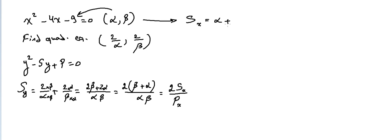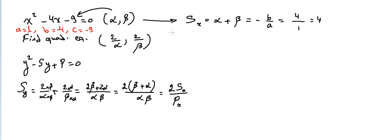Alpha plus beta, the sum in x, equals minus b over a. Since a equals one (coefficient of x squared) and b equals minus four (coefficient of x), the sum is minus(minus four) over one, which is four. The product alpha times beta equals c over a, where c is minus nine and a is one, giving minus nine.